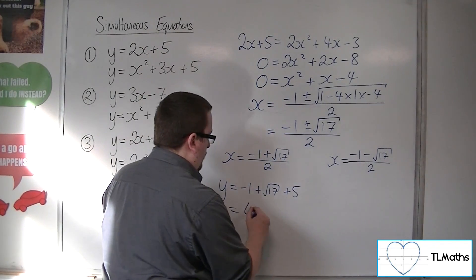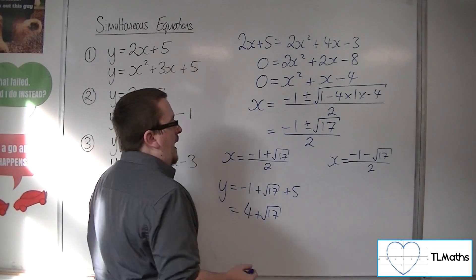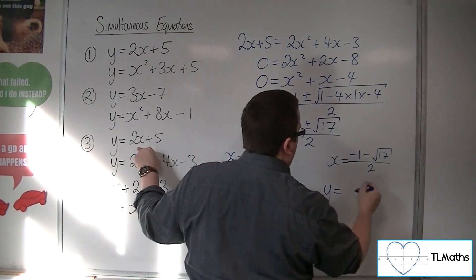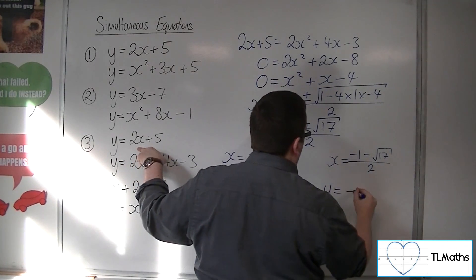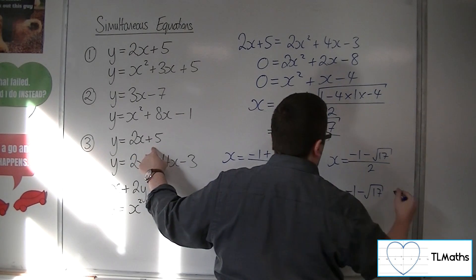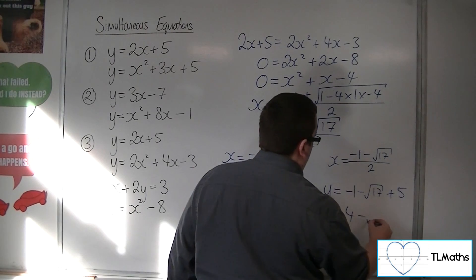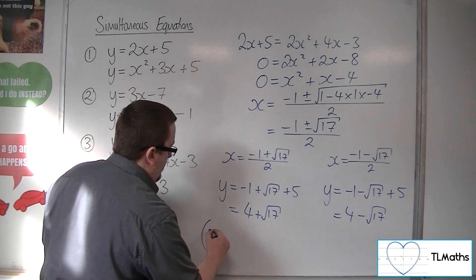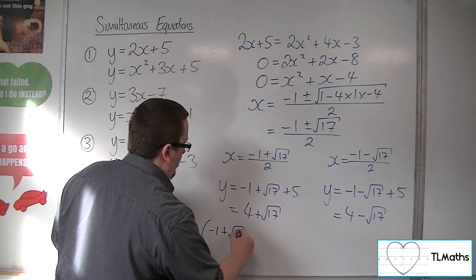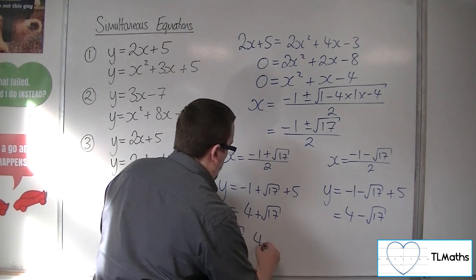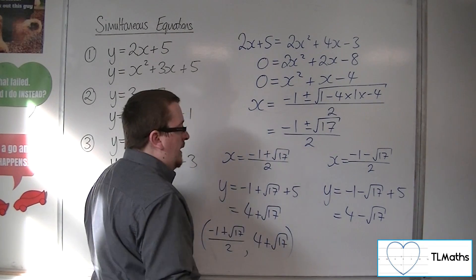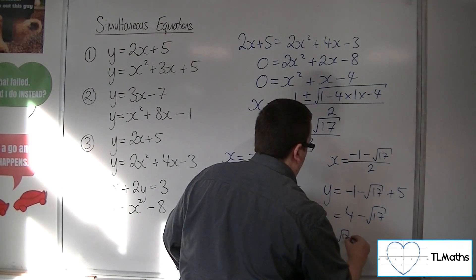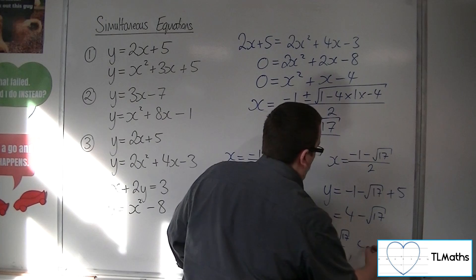So that gives 4 plus root 17. Doing the same with the other x value — multiplying through by 2 cancels the half — so minus 1 take away root 17, and adding the plus 5 gives 4 minus root 17. So our two intersection coordinates are: ((−1 + √17)/2, 4 + √17) and ((−1 − √17)/2, 4 − √17).